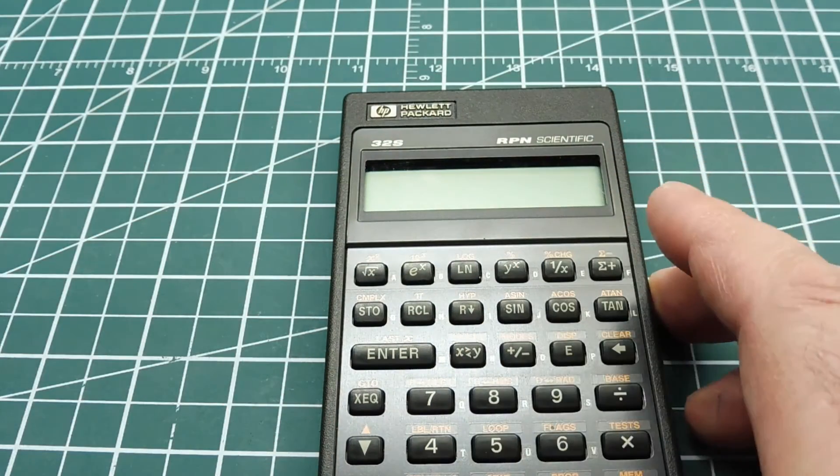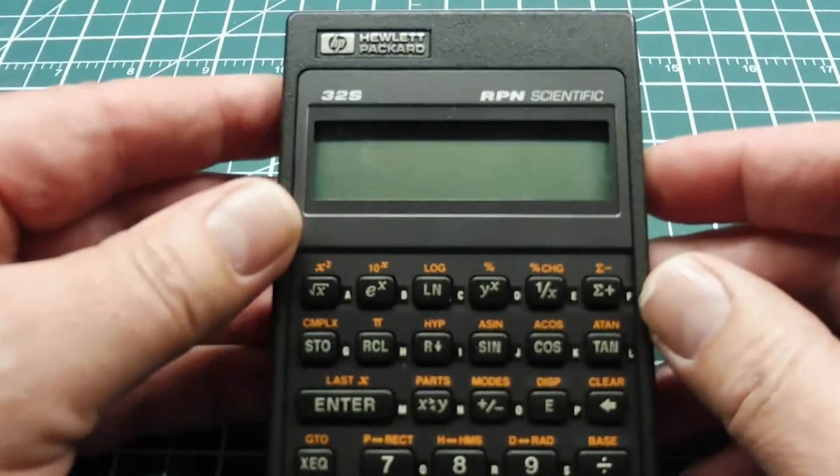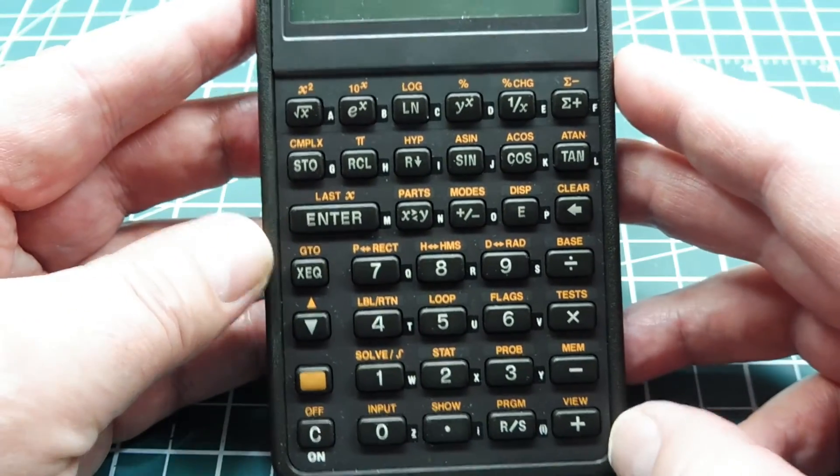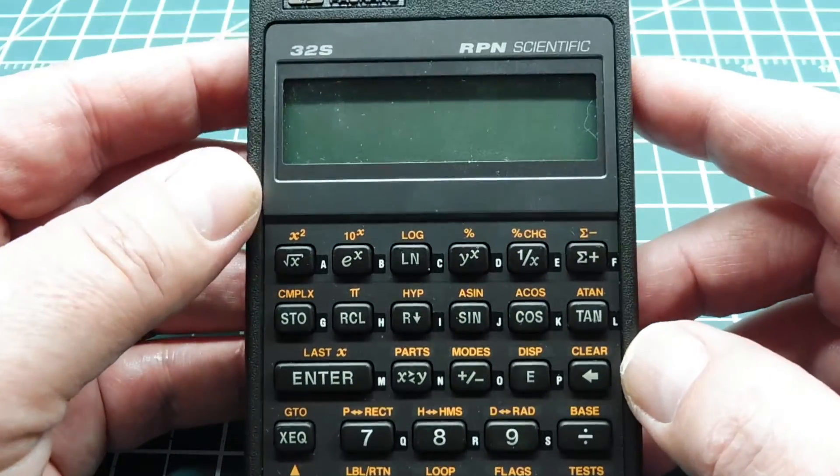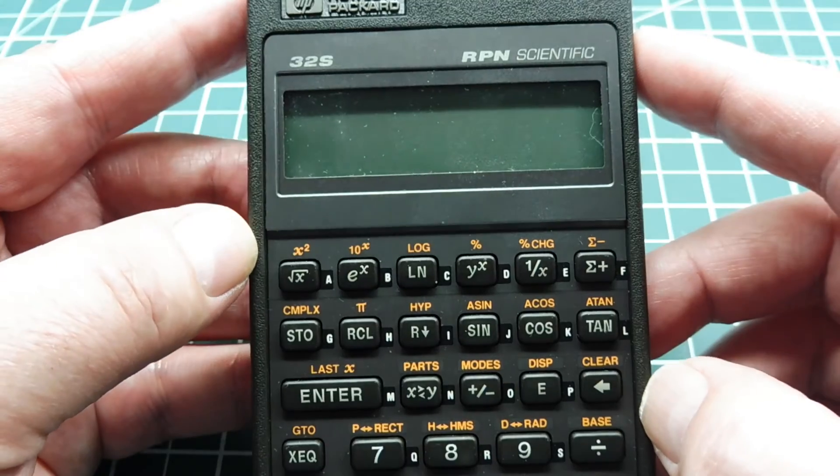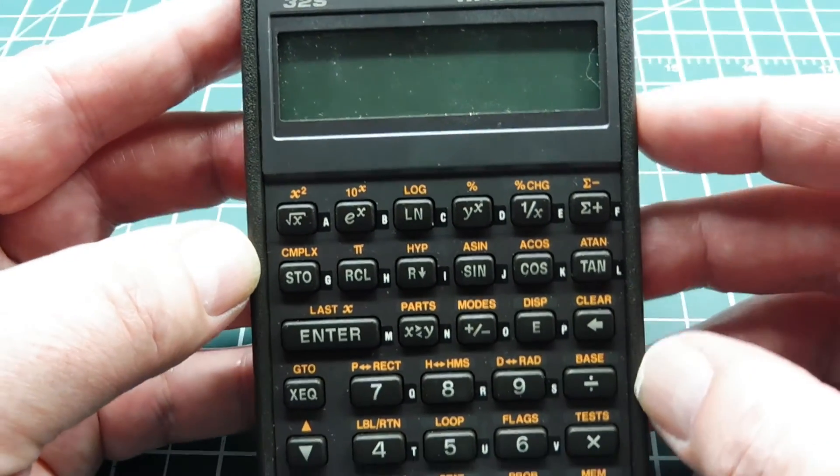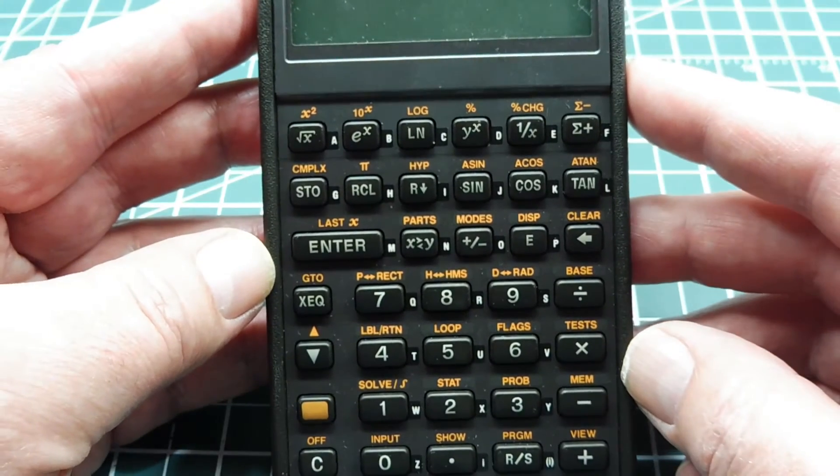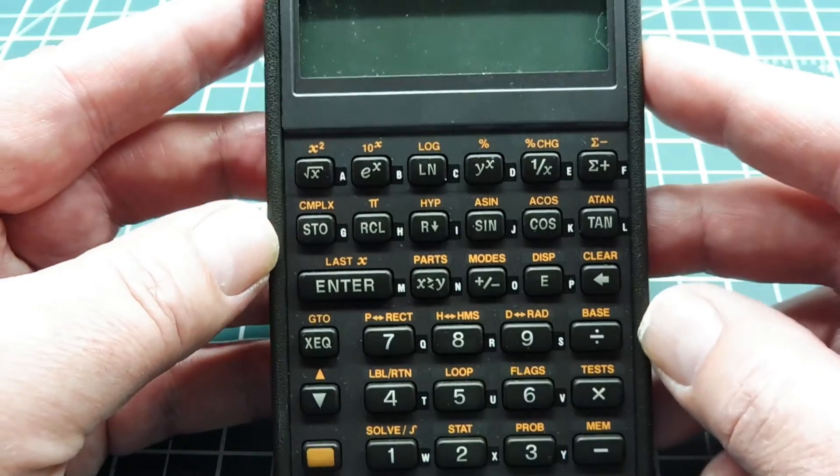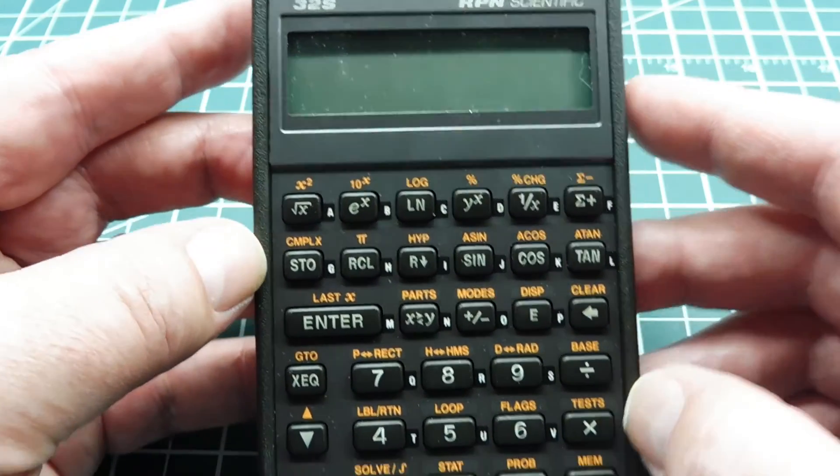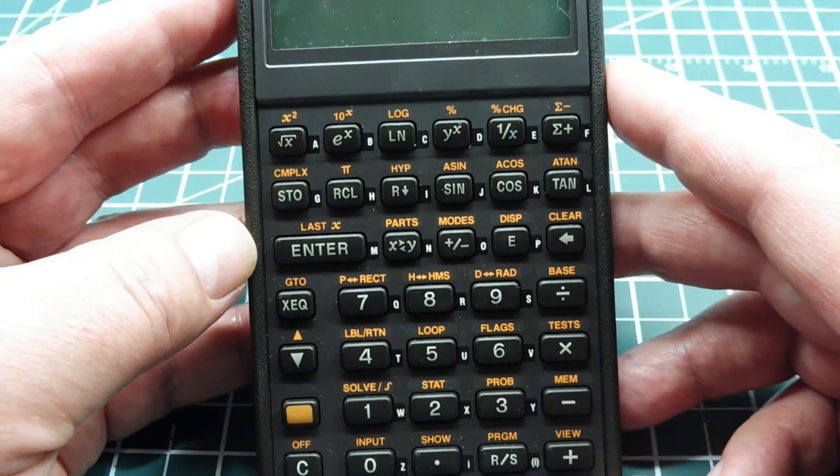Now this is the Hewlett Packard reverse Polish notation calculator. I used this calculator going through university, and a lot of people thought it was strange so they didn't use it, but I used this calculator as my secret weapon. I could plow through complex problems very fast and efficiently. So if you use one of these calculators you know what I'm talking about, and if you haven't used one, then you should talk to somebody who has and they can tell you a few stories.